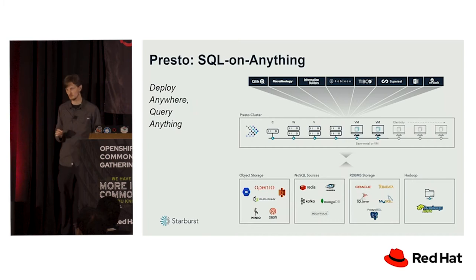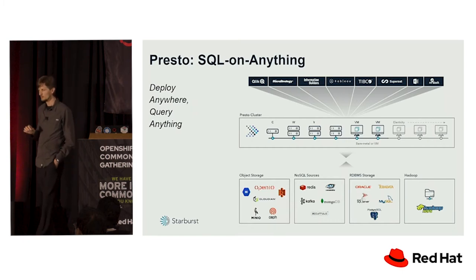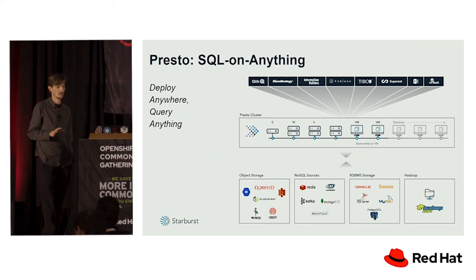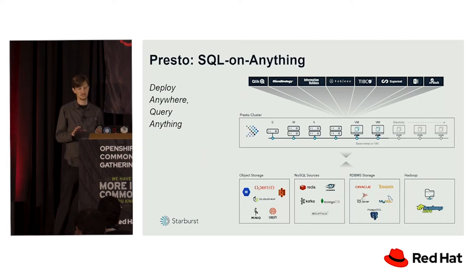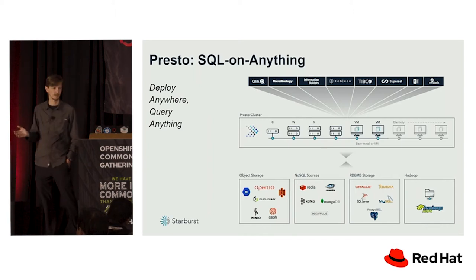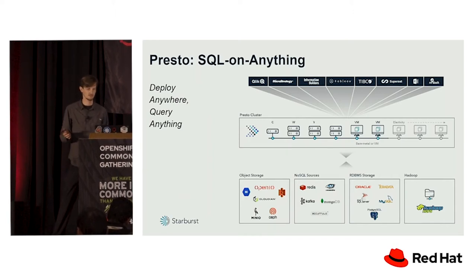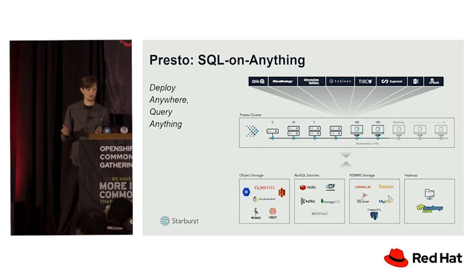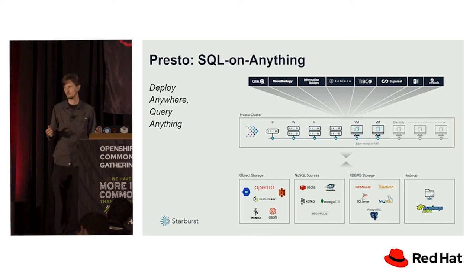What's unique about Presto is it's a compute-only distributed SQL engine, which means you can deploy it almost anywhere, and you can allow Presto to access data from many different data sources. Some of those are object storage like Ceph, Amazon S3, Google Cloud Storage, Azure Blob Storage, ADLS, and other technologies like this. You can also query HDFS and Hadoop.